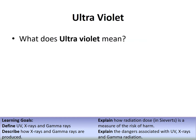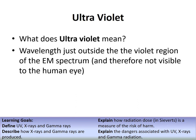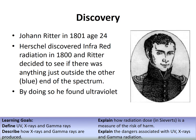Ultraviolet means its wavelength is just outside the violet region - just shorter than the violet end of the EM spectrum - so it is not visible to the eye. It was discovered by Johann Ritter in 1801, when he was just 24. Herschel had discovered infrared radiation in 1800, and Ritter investigated whether there was anything just beyond the violet end of the spectrum, discovering ultraviolet in the process.